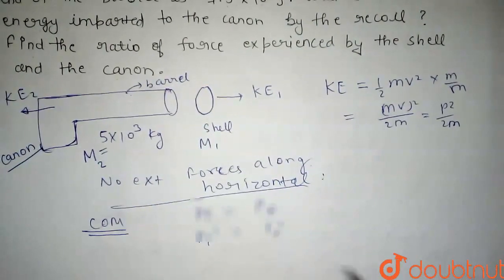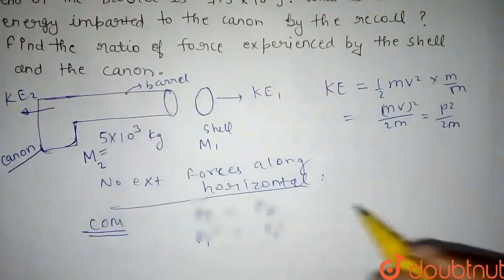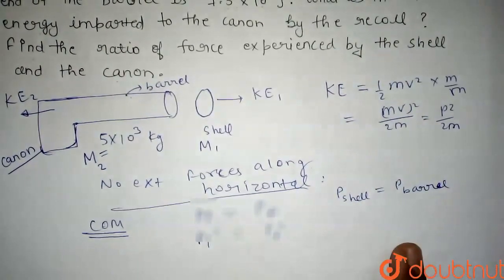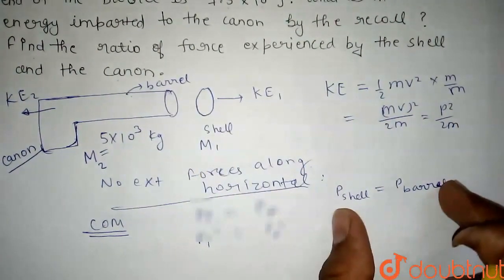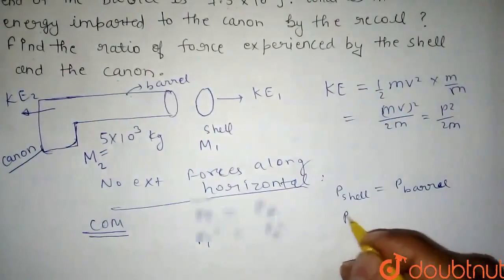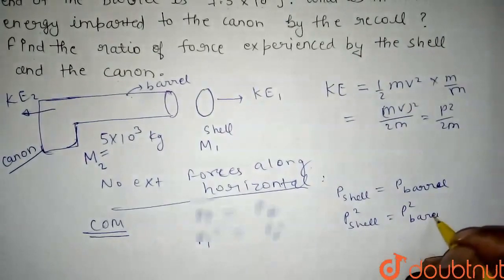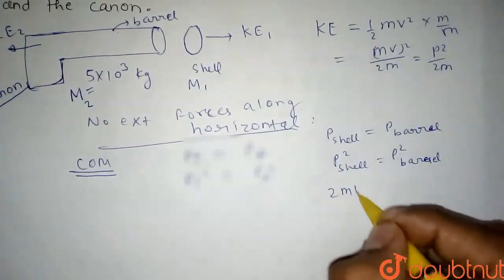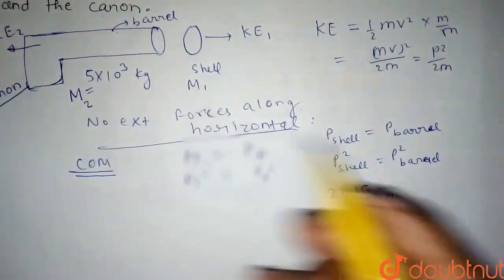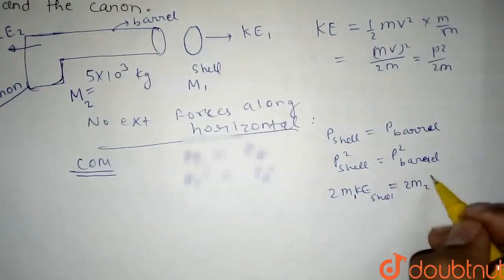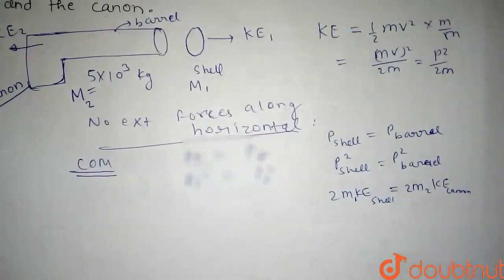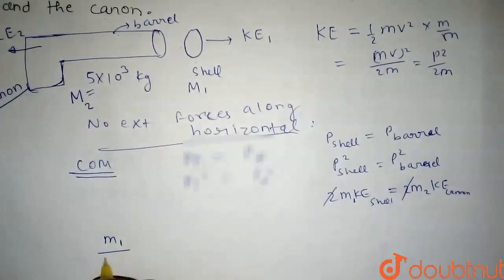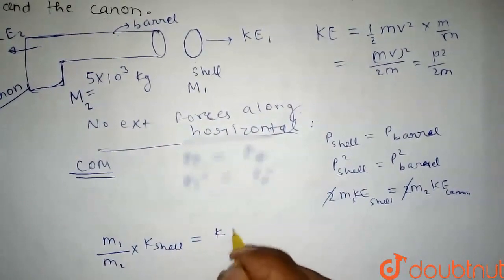Momentum conservation means that the momentum given to the shell must equal the momentum given to the barrel. So the momentum of the shell equals the momentum of the barrel. Squaring both sides, we can write p² = 2M×KE. So 2×M1×KE of shell is equal to 2×M2×KE of cannon. Since KE of shell is given, this simplifies so that M1 upon M2 × KE of shell = KE of cannon.